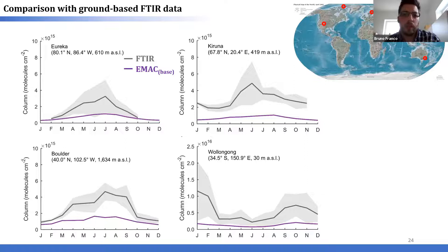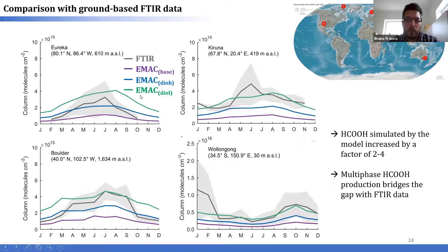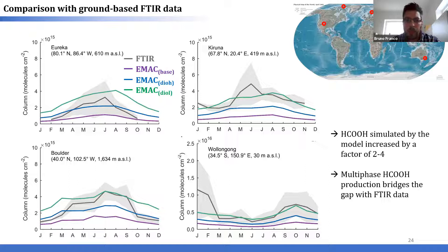Let's consider again the comparison between the model simulations and the FTIR data. As we saw, the base case configuration completely underestimated formic acid columns. These are now the new results from the simulations implementing the multi-phase production of formic acid — in blue the high-solubility simulation, in green the low-solubility simulation. We can see that a huge additional amount of formic acid is produced thanks to the multi-phase chemistry, and we now have a much better agreement with the FTIR data. This shows that the multi-phase production of formic acid has the potential to reconcile model predictions and remote sensing measurements.